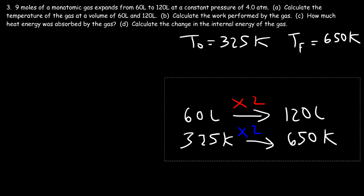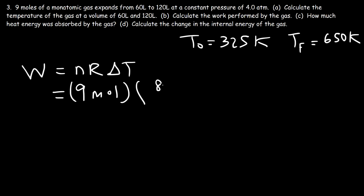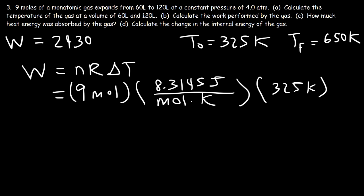Part B: Calculate the work performed by the gas. Using W = nR ΔT at constant pressure: n = 9 moles, R = 8.3145 joules per mole per Kelvin, and ΔT = 650 − 325 = 325 Kelvin. So 9 times 8.3145 times 325 gives us approximately 24,300 joules.